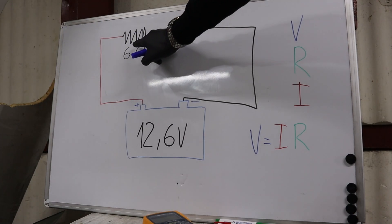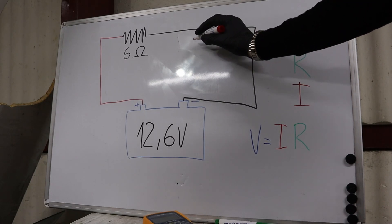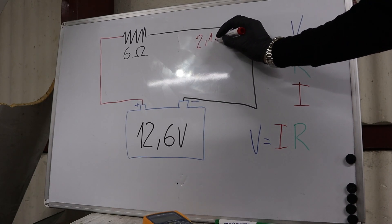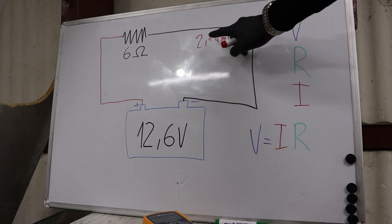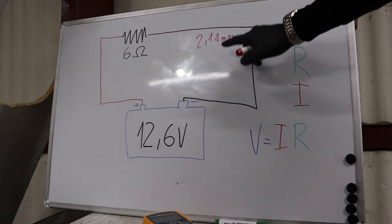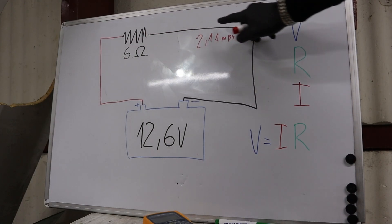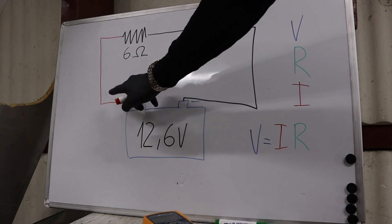The more resistance it has, the less current we will have. In this case, we calculated the current is 2.1 amps. Remember that current is exactly the same in all the circuit. Here is 2.1 and here is 2.1 amps. Everywhere in the circuit we have 2.1 amps current.